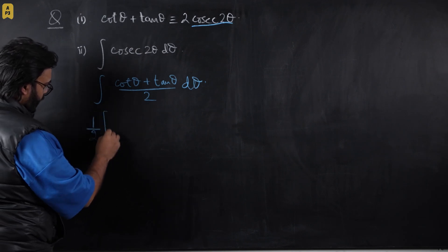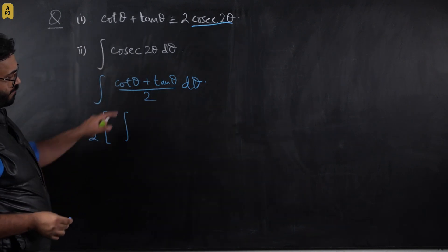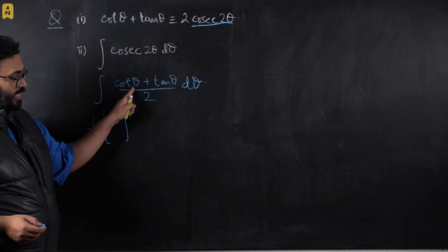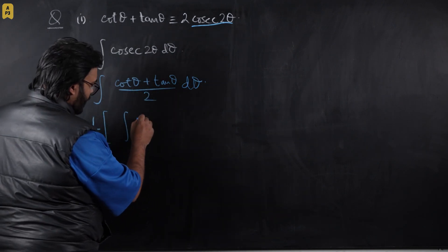And we will integrate both of these separately. So I'm going to write integral of cot θ plus integral of tan θ. Now we know from basic integral principles that cot θ and tan θ both are integrated by bringing them to their fraction form.